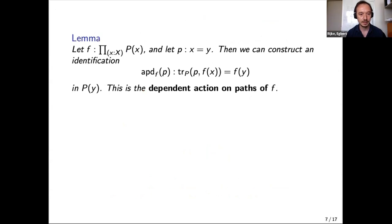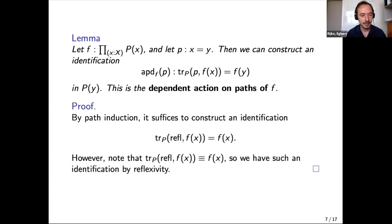There is the notion of the dependent action on paths of f. We have f a dependent function and a path identification p from x to y. We want to apply f to p. We know where the endpoints go: f(x) is in P(x) and f(y) is in P(y). These types differ, but we can transport f(x) to the type of P(y) and ask if they're equal. By path induction on p, in the reflexivity case they are the same, so the dependent action on paths computes only on refl.